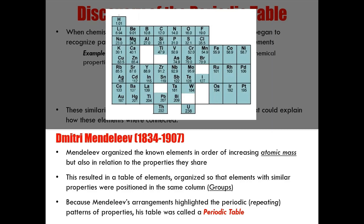Because Mendeleev's arrangements highlighted the periodic or repeating patterns of properties, his table was called a periodic table. He then used the repeating pattern of properties in his table to predict the existence of elements that had not yet been discovered. He left blank spaces in the table as placeholders to represent those unknown elements. Mendeleev was so convinced that his placeholder elements existed that he correctly assigned each one of them with an atomic weight and physical properties.